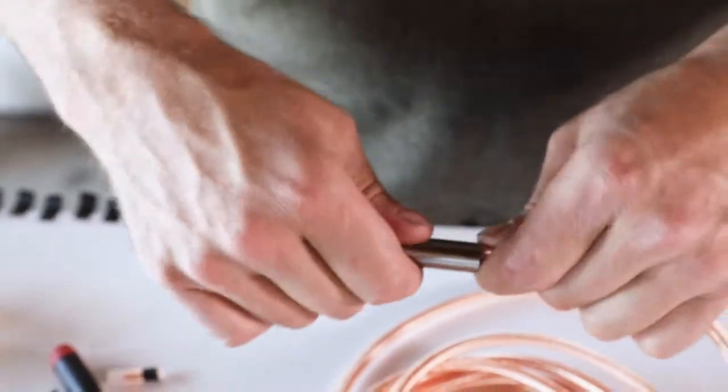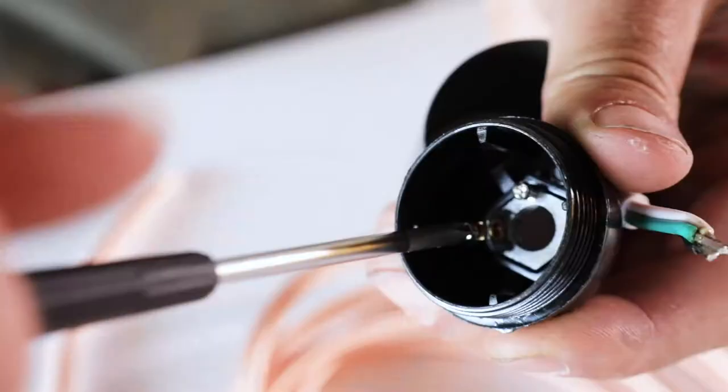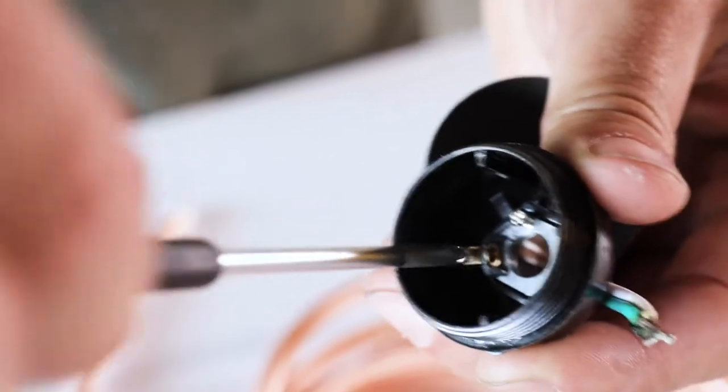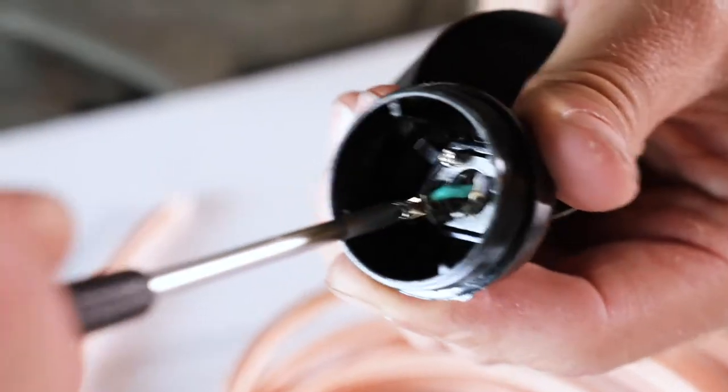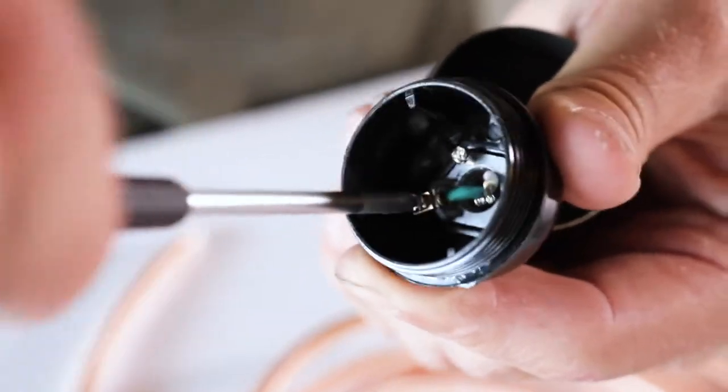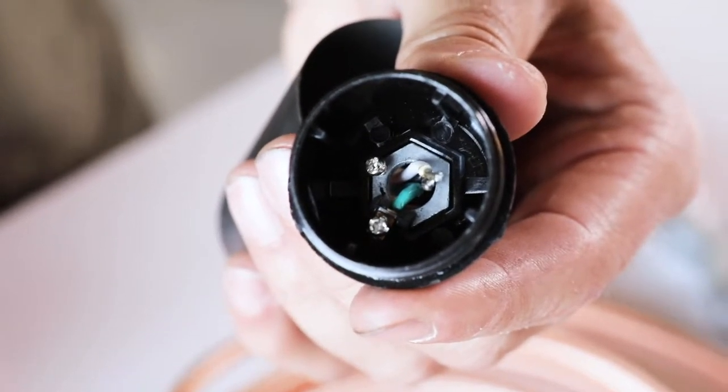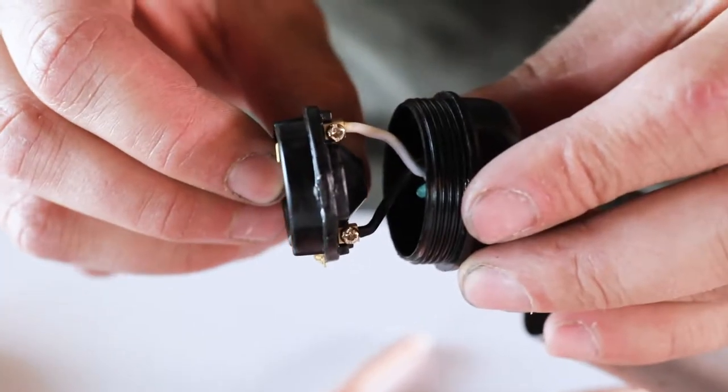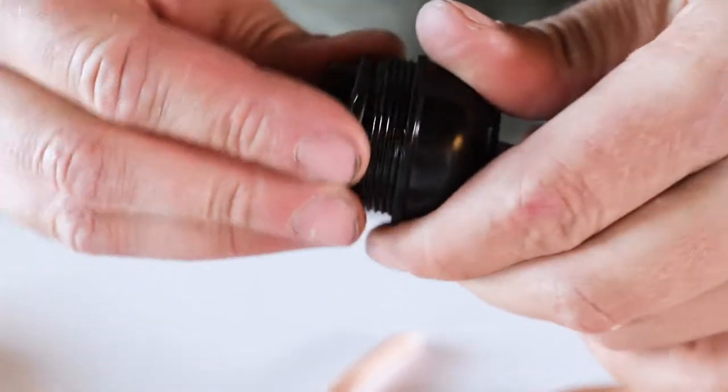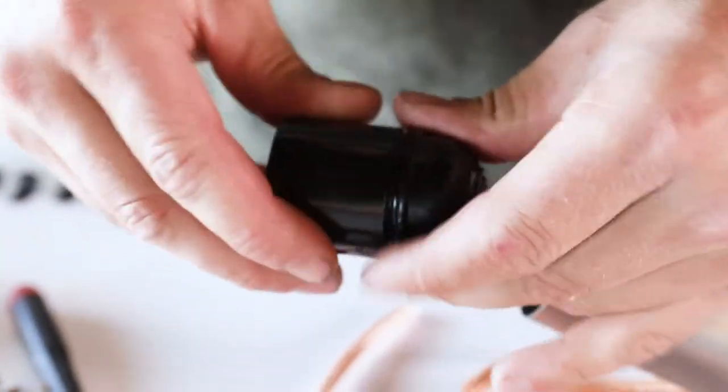Take your cord grip and optional socket cover and feed the cord through with the threads of the cord grip and the bottom of the socket cover facing the exposed wires. Do the same with your socket cap and loosen the ground screw to insert the green ground wire, then secure that ground wire with the ground screw. Next, take your socket terminal and loosen the terminal screws. Insert the black positive wire into the gold terminal and the white negative wire into the silver terminal. Secure these down with the terminal screw.